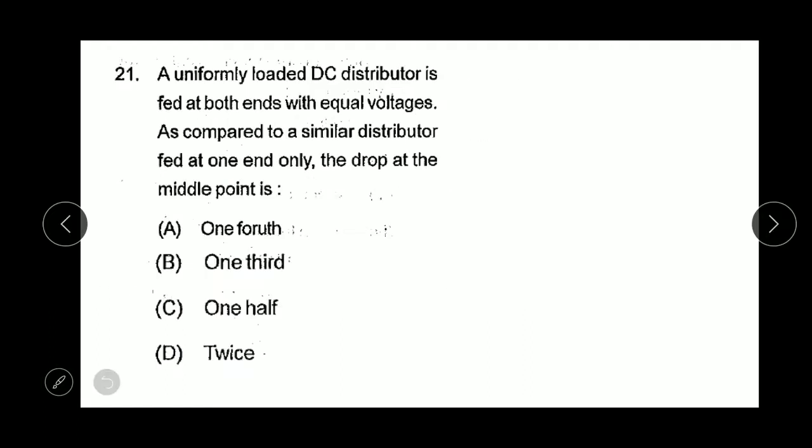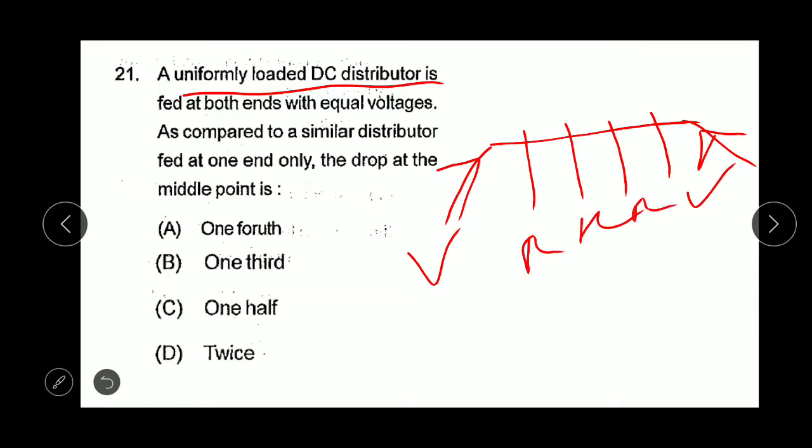Question 21: A uniformly loaded DC distributor is fed at both ends with equal voltages. As compared to a similar distributor fed at one end only, the drop at the midpoint is? This is a uniformly loaded DC distributor. Suppose this is the distributor with loads and one source here and another source here.